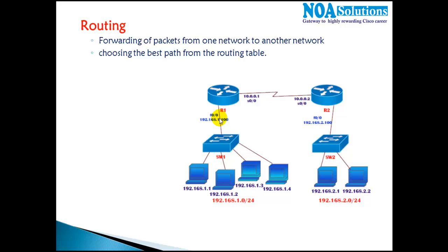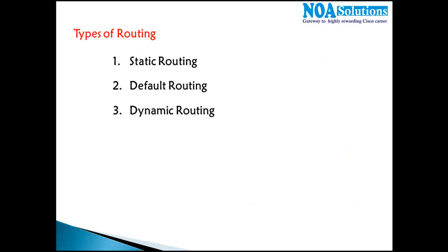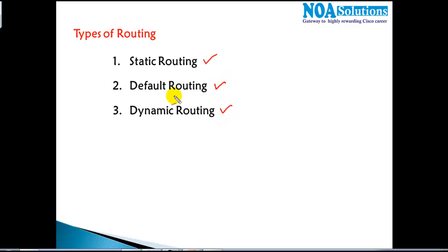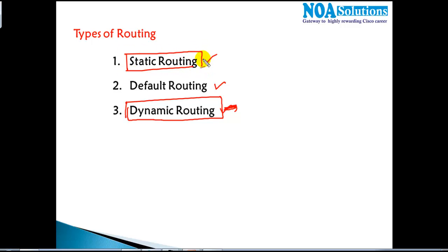If you want to communicate between two different networks you must configure routing, and there are three different types: static routing, default routing, or dynamic routing. Dynamic routing is the most commonly used in practice. We will first learn the basic concepts with static routing, and then for routing packets to the internet we use default routing.